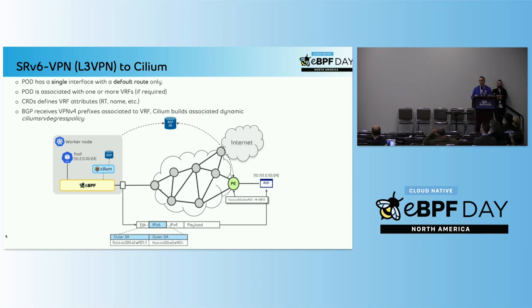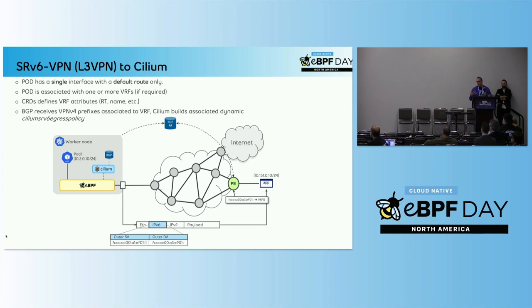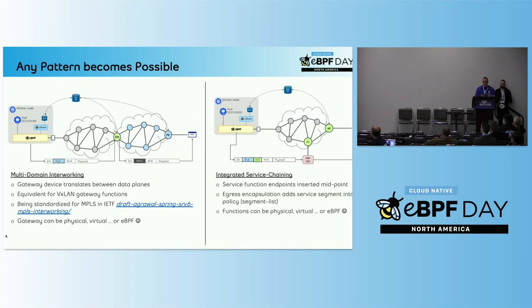The idea was how to leverage Cilium constructs and egress policies to enable a pod with a single interface, single default routing table, nothing complex — no forwarding rules, no static IP routes — to attach the right networking constructs when required. We use the logic of BGP VPN for the Layer 3 VPN advertisement to create those policies dynamically. So from a developer perspective, you just assign a VRF, and the rest becomes really quite simple.